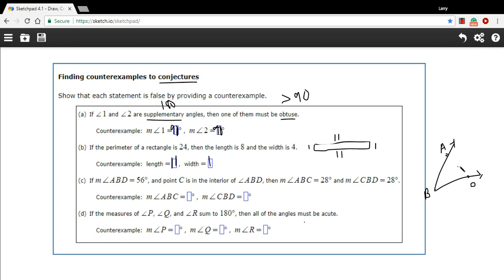So we just put point C somewhere inside that angle. Then the measure of ABC—okay, so they're making another angle by drawing a line through C there—so ABC is 28 and CBD is 28.